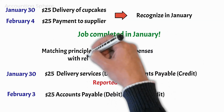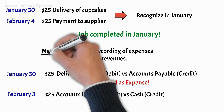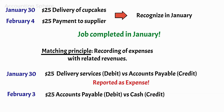The matching principle is critical in determining how lucrative a company was during a certain time period. Marianne explains to Michael that including the $25 on the January income statement would result in a match between the cost of the service needed to deliver the cupcakes and the revenue generated by delivering the cupcakes in January. She is pleased to see that Michael already understands this fundamental accounting theory intuitively. To generate income in January, the company had to expend certain costs in January, even though these costs would not be paid until February.